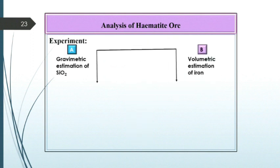After this, we have two parts: Part A is gravimetric estimation of silica and Part B is volumetric estimation of iron.